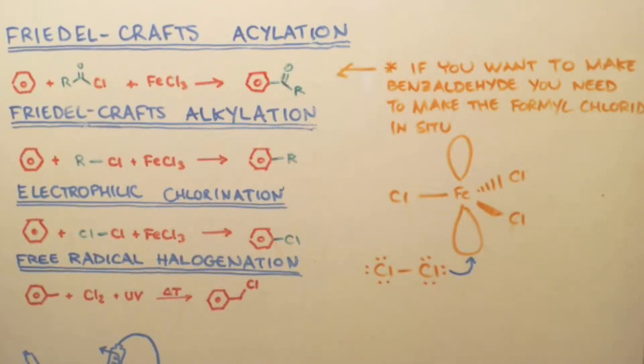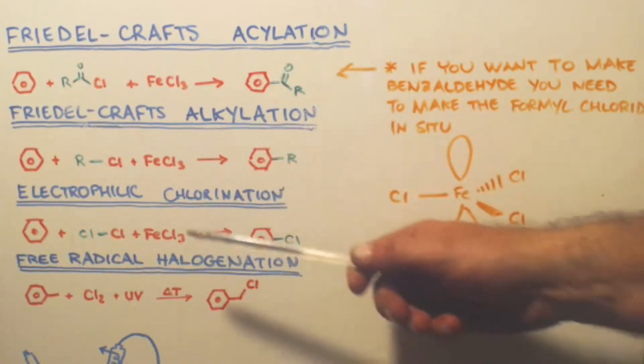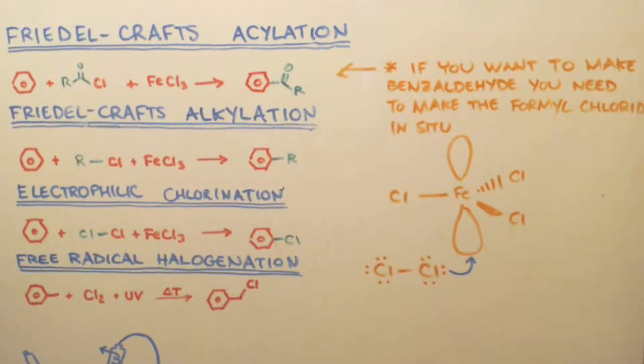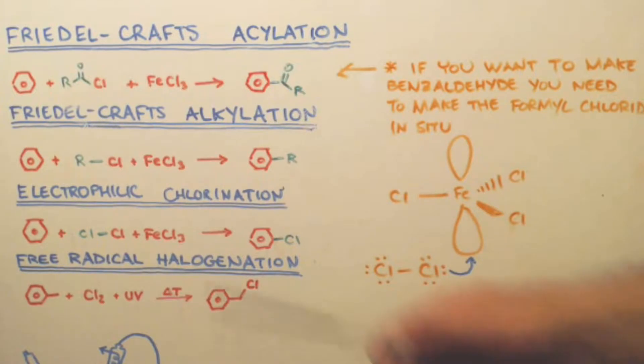Before I go into how to make benzoyl chloride, I want to go over these three reactions real quick, because they're so similar that it's unreal. Friedel-Crafts acylation, alkylation, and electrophilic halogenation. I put chlorination because I use chlorine as my halogen.